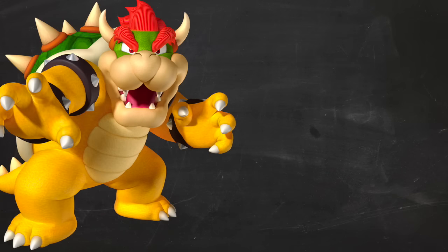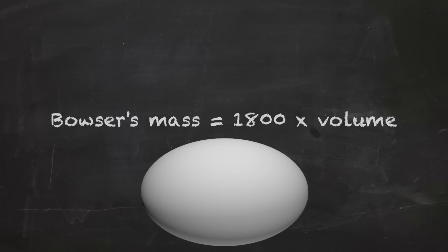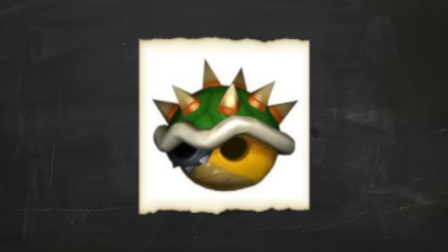So now that we've received our turtle density, we must throw it into Bowser's equation. And as our final step to finding his mass, we must calculate his volume in nearly the exact same way we did to the other turtle, except Bowser clearly takes up a lot more space.